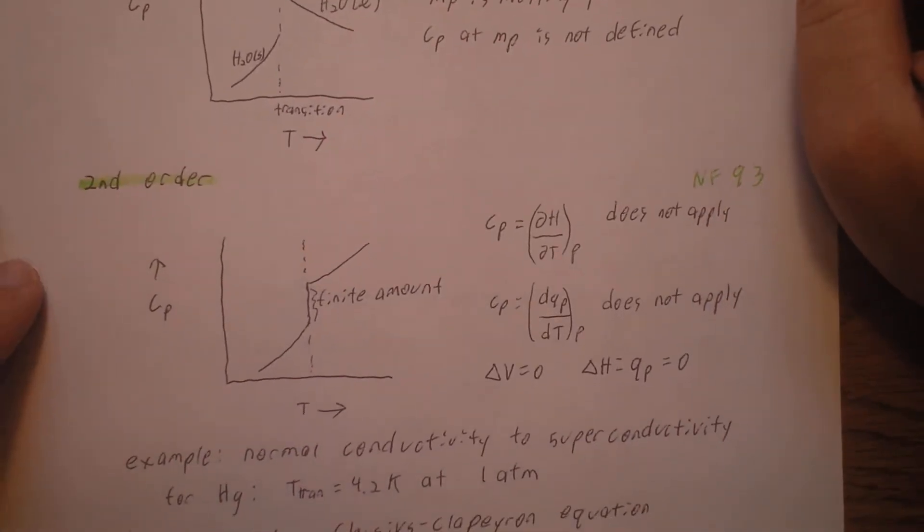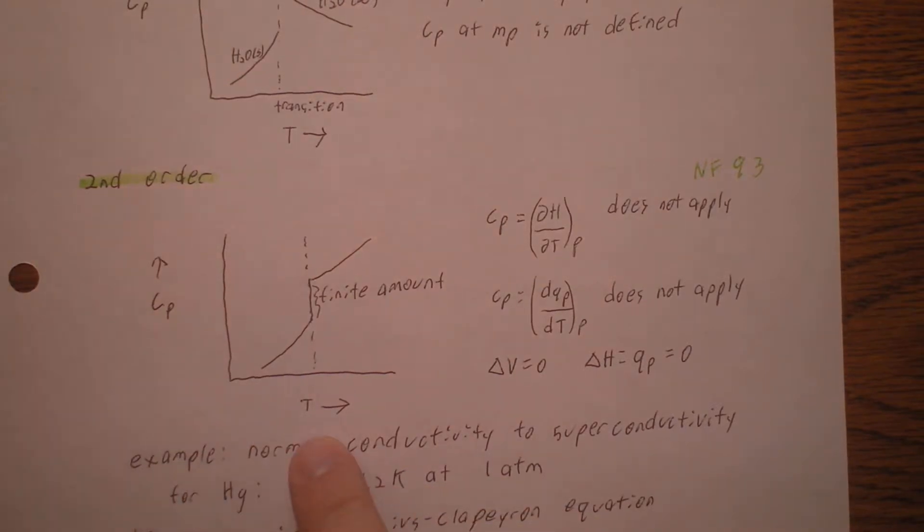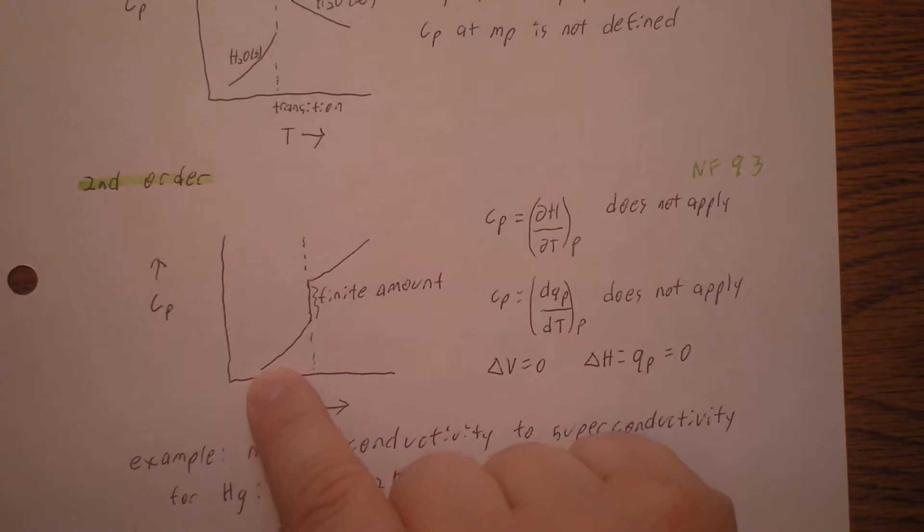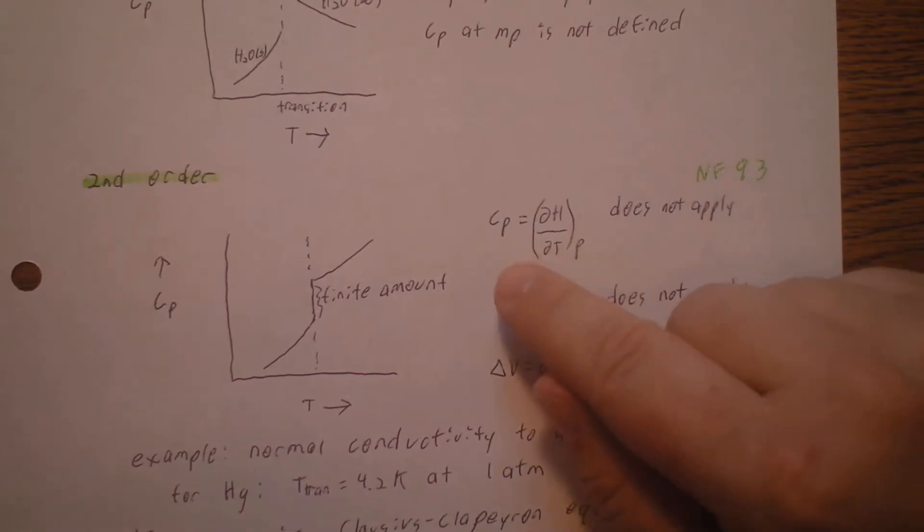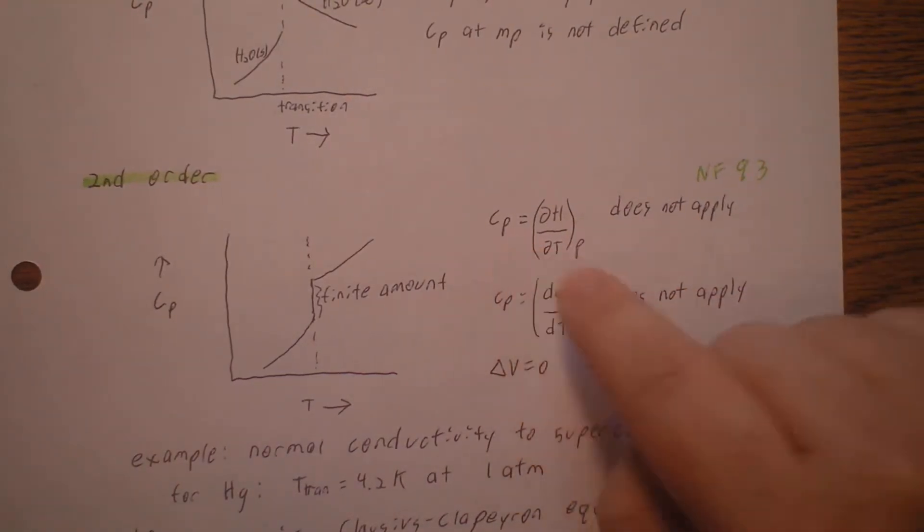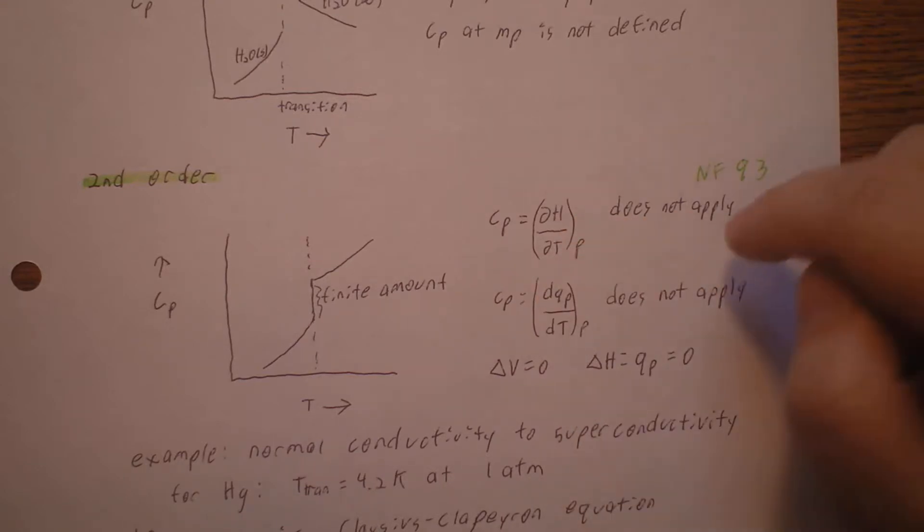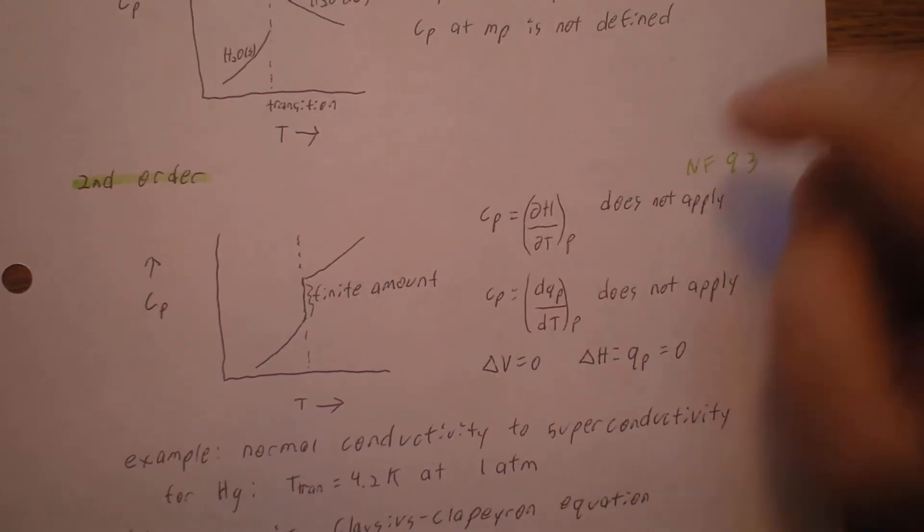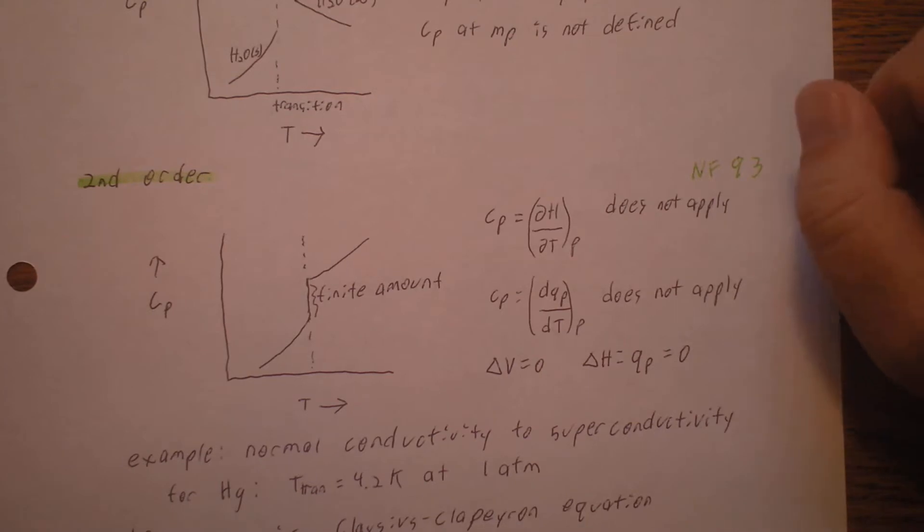Now let's look at an example of a second order transition. Here we are graphing heat capacity versus temperature. As we approach the transition, the heat capacity is going to increase by a finite amount, and then it's going to continue on its merry way. The heat capacity at constant pressure is the partial derivative of enthalpy with respect to temperature holding pressure constant, but that formula does not apply to this. Likewise, the heat capacity, the change in heat at constant pressure with respect to temperature, that does not apply to this either.